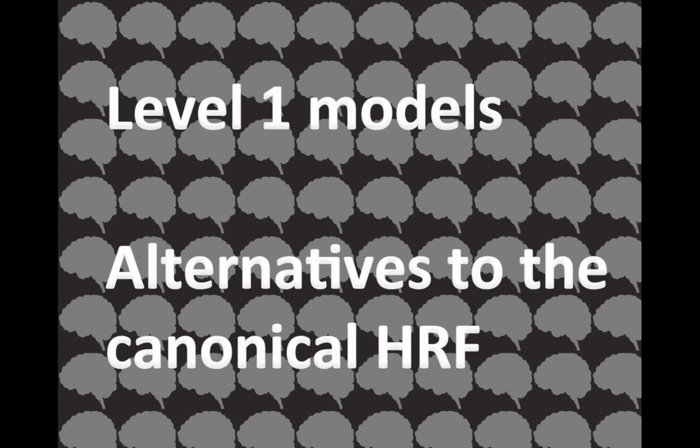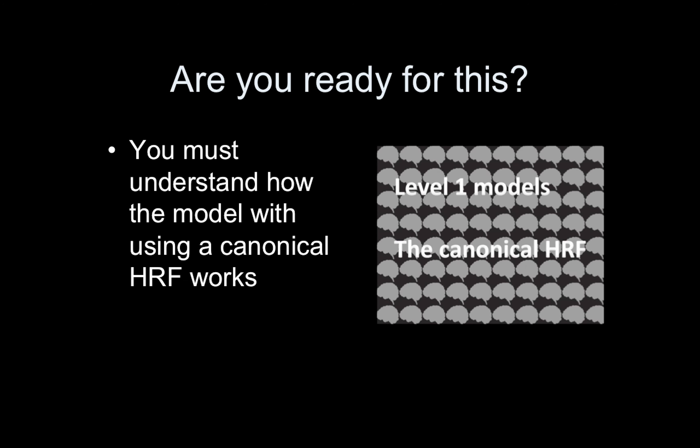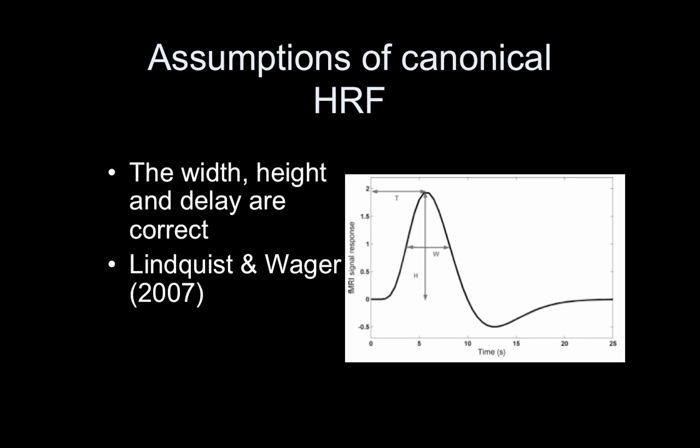Welcome to the second day of Level 1 Models. Today we're going to talk about alternatives to the canonical HRF. If you don't know what the canonical HRF means, please go back and revisit that lecture. Last time we discussed the canonical HRF — basically an assumed BOLD response to an isolated stimulus — and we created regressors by convolving a canonical HRF with the expected neuronal response, which is determined by when the stimuli are presented.